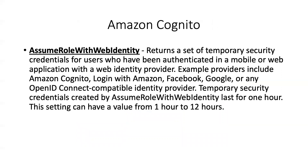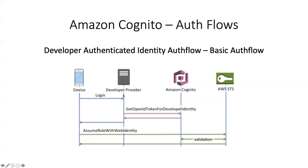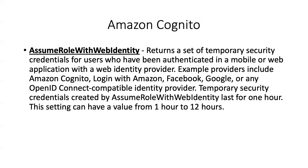The AssumeRoleWithWebIdentity API returns a set of temporary security credentials for users who have been authenticated in a mobile or web-based application with a web identity provider. Example providers include Amazon Cognito, Login with Amazon, Facebook, Google, or any OpenID Connect-compatible solution. The credentials returned last only one hour by default, but you can configure this to be between one hour and twelve hours.